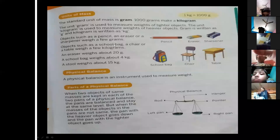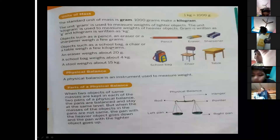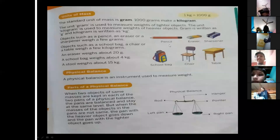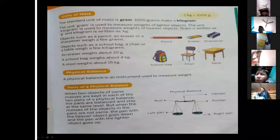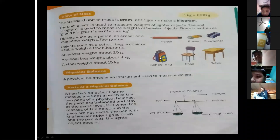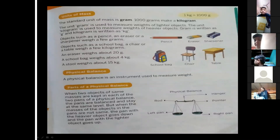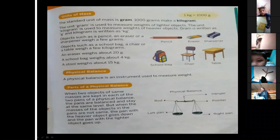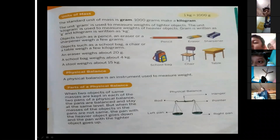Objects such as school bag, chair, and table have a weight of a few kilograms. They are measured in kilograms. School bag, chair, and table — their weight is less in grams, so we measure them in kilograms.